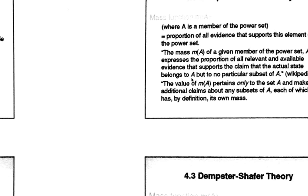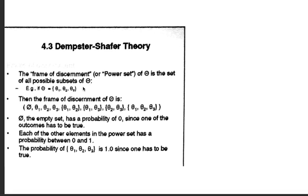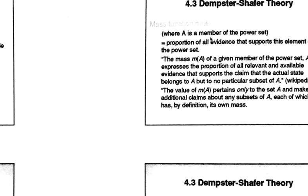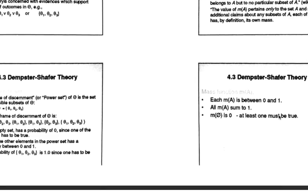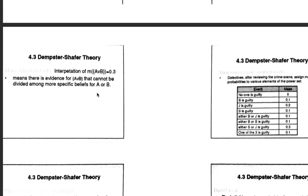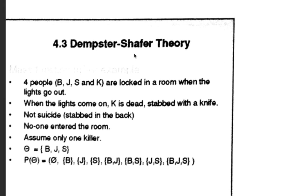The mass is given based on the evidences. Mass of A is given — A is an element of this power set, as you have seen: M of theta 1, M of theta 2, M of theta 3, M of theta 1 and theta 2. Based on the evidence I try to give masses to elements. Each mass is between 0 and 1, and all the masses M(A) must sum to 1. M of phi is 0. The mass given based on the evidence is for A or B together, not for individual A or individual B.